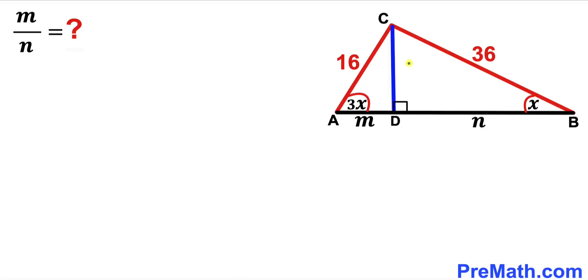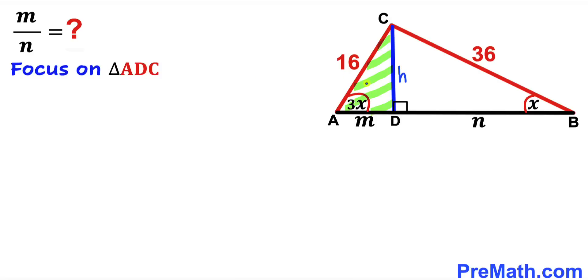Let's label the perpendicular CD as height lowercase h. Now let's focus on right triangle ADC.